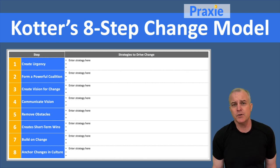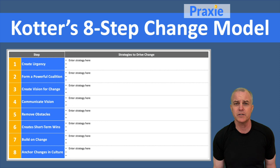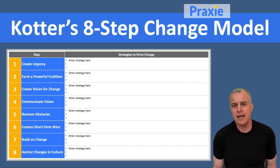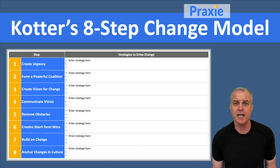If you create that urgency, then what you're able to do is form what's called a coalition — a group of individuals who are going to sponsor and drive the change forward. Once you have that urgency and you have the group, you can really create a vision for change — what you want to see as the future state.